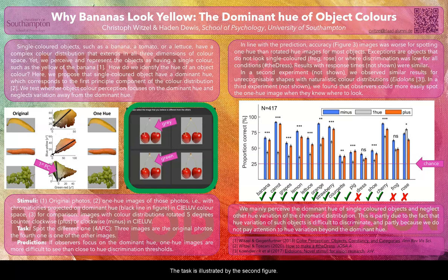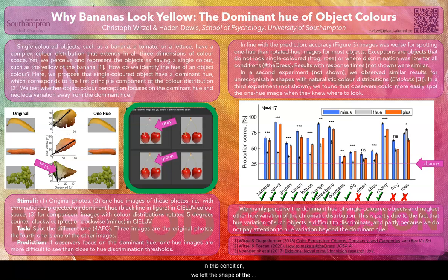In this example the one-hue version of the cherry can be identified by the stem being gray instead of green as in the three original photos. To show how difficult it is to spot the one-hue version we created a comparison condition. In this condition we left the shape of the distribution untouched and rotated the distribution a tiny bit in color space.